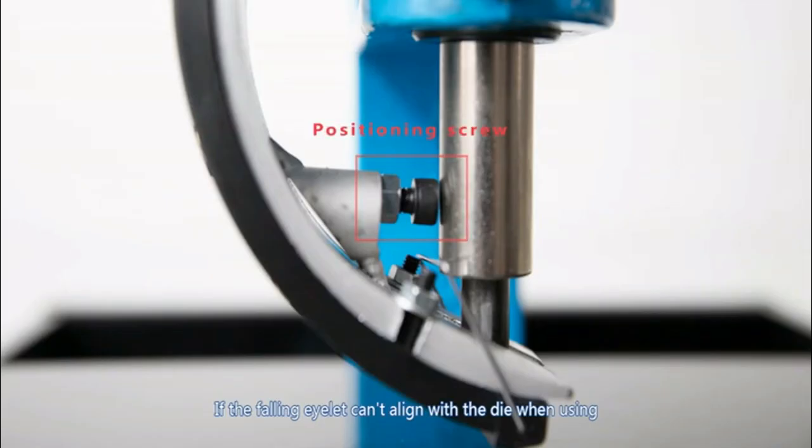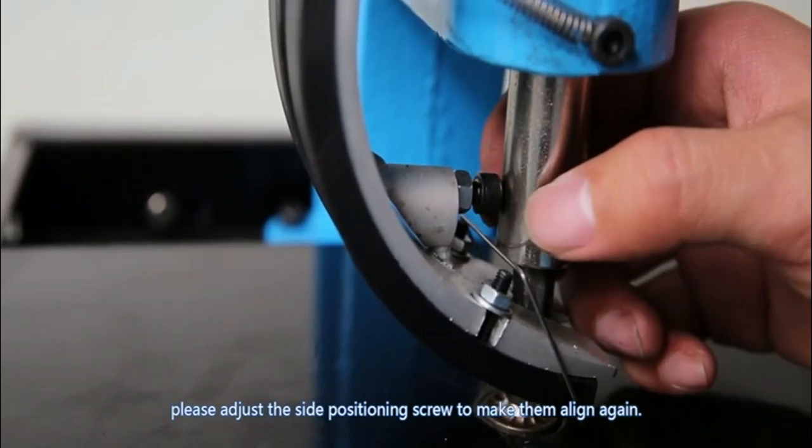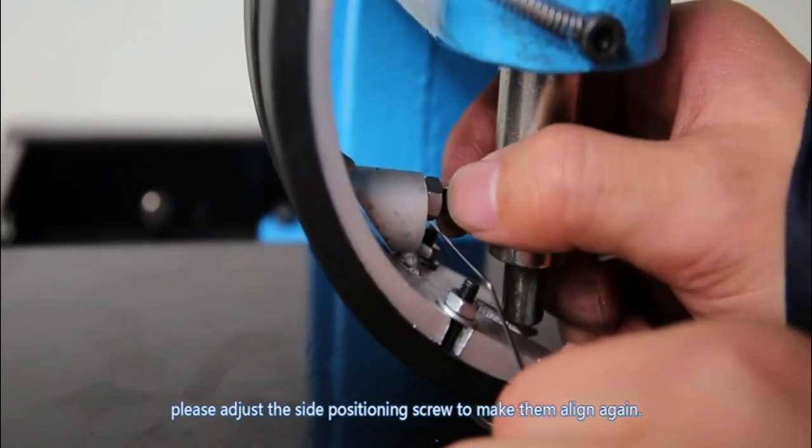If the falling eyelet can't align with the die when using, please adjust the side positioning screw to make them align again.